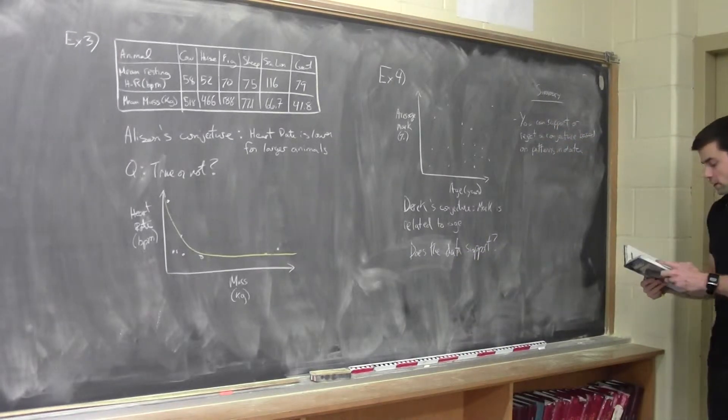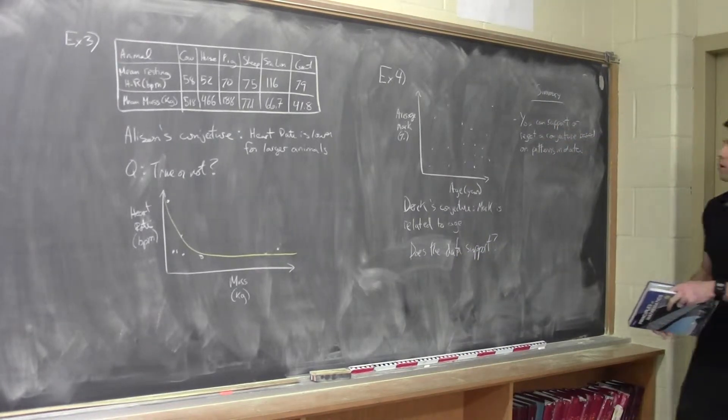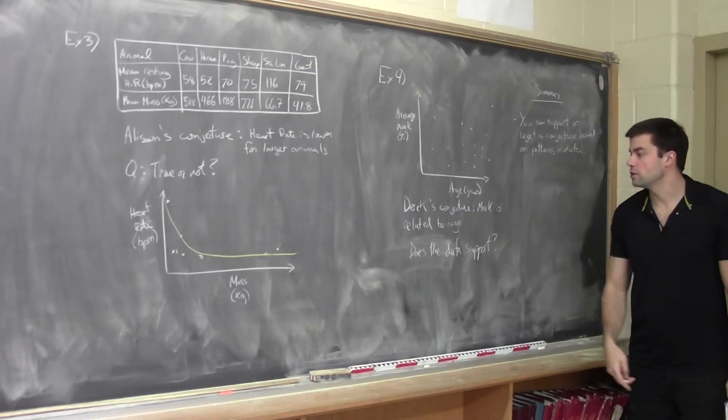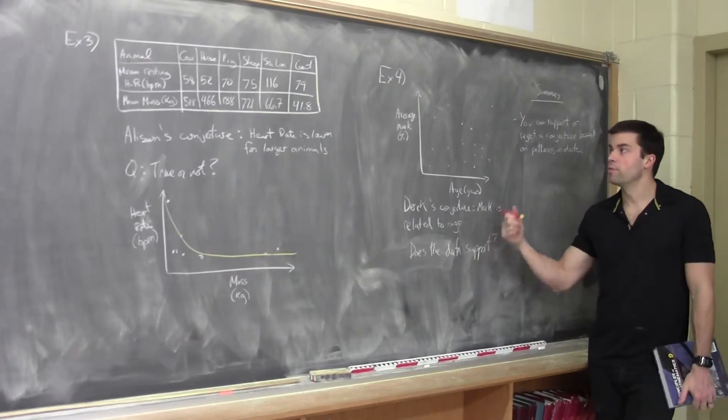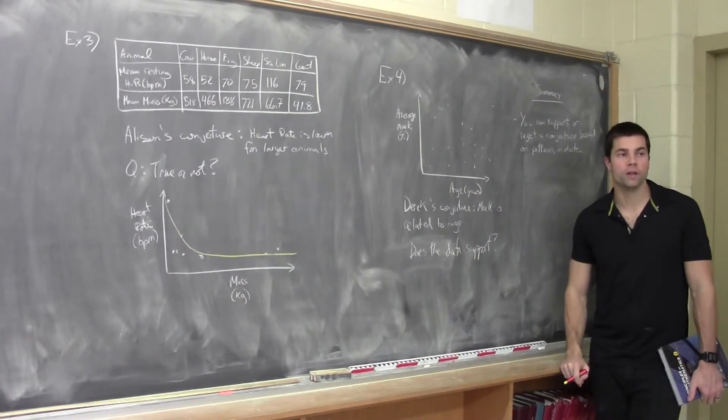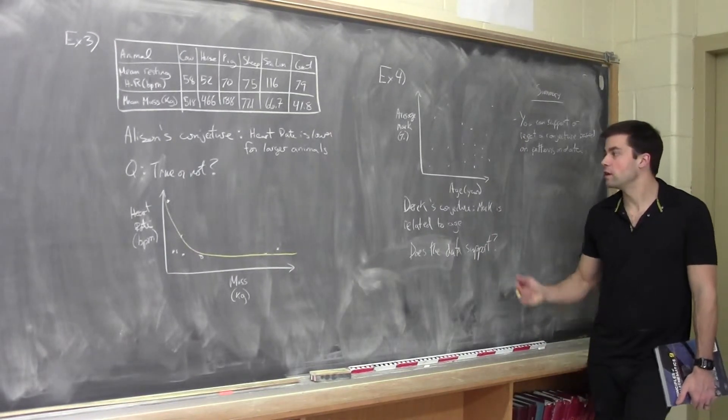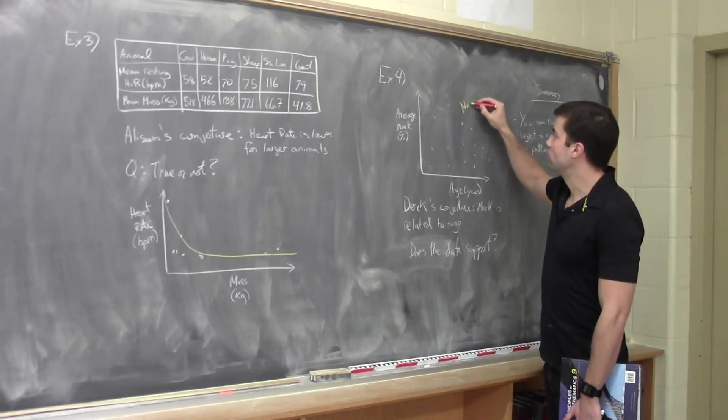All right, example four. Final example, we have grade nine math marks versus the age. So Derek's conjecture is that your mark is related to your age. Does the data support? So you can see the data's all over the place. So in this particular example, we could say that there's no relation.